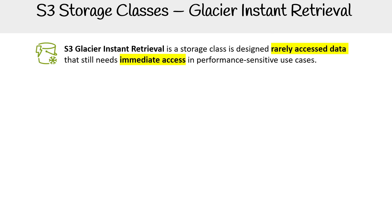S3 Glacier Instant Retrieval is a storage class designed for rarely accessed data that still needs immediate access in performance-sensitive use cases. Normally, when you use S3 Glacier, it's for archival storage, and the assumption is you're not going to have it immediately accessible. So this is a very special class.